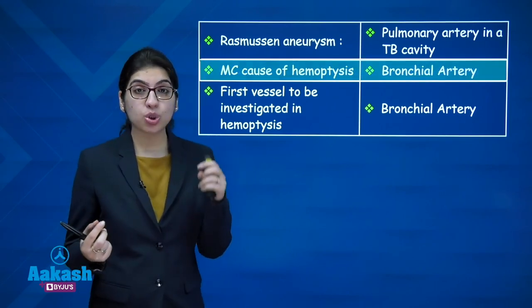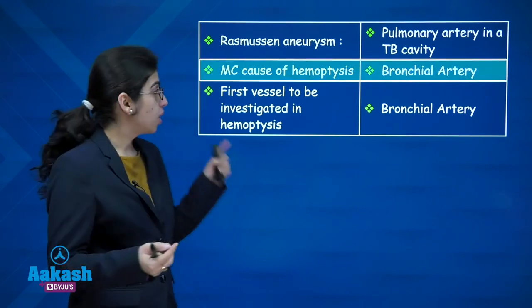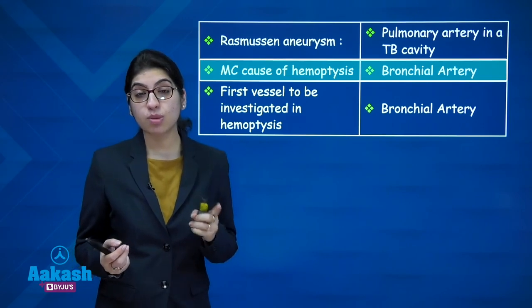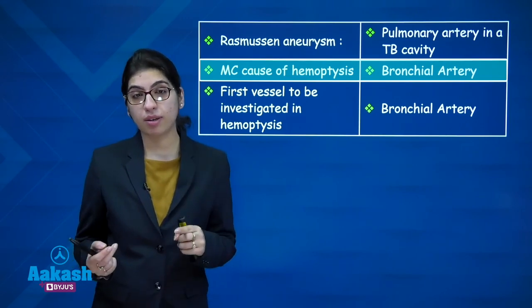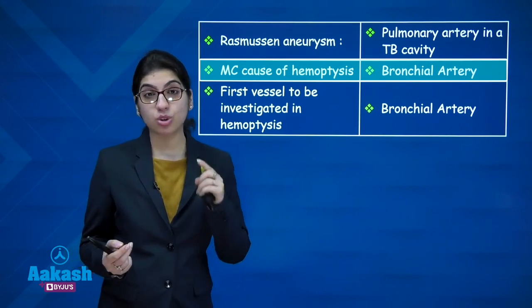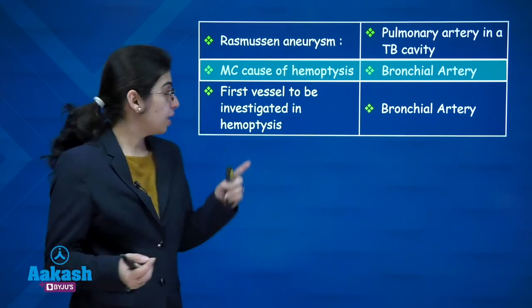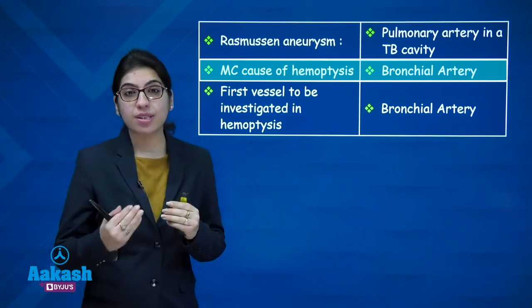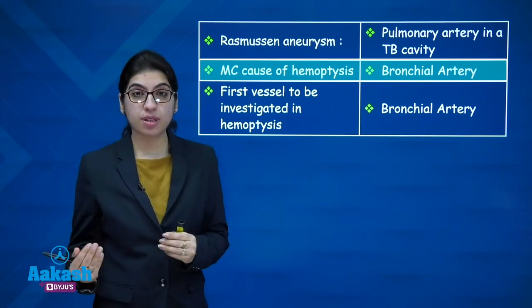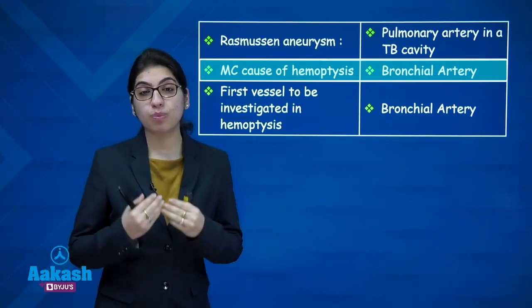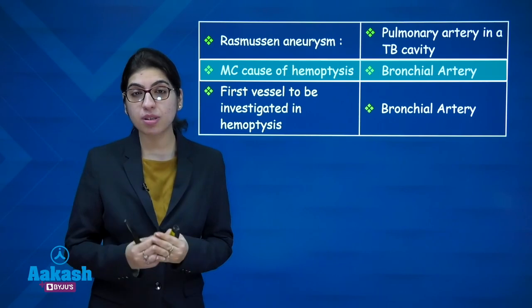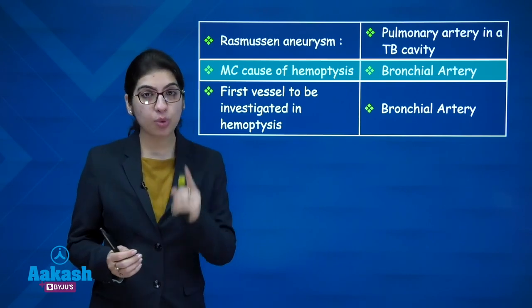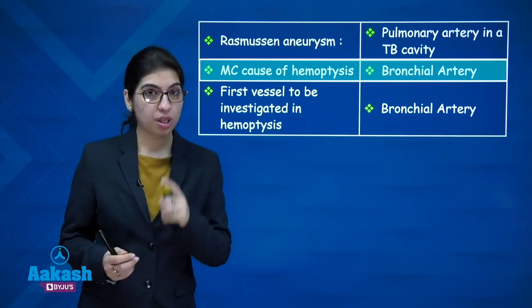The most common cause of haemoptysis in tuberculosis is the bronchial artery — not the pulmonary artery. Therefore, if investigating one vessel in a patient with haemoptysis in tuberculosis, it would be the bronchial artery.